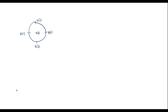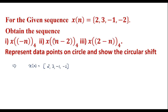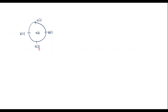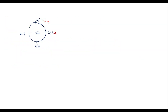So let me write the values. Here x[0] is 2, x[1] is 3, x[2] is -1, and x[3] is -2. So this is our x[n] sequence represented on the circle.